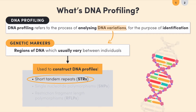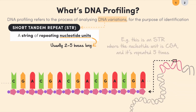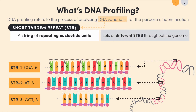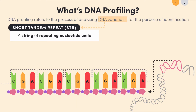STRs consist of a string of repeating nucleotide units that are usually two to five bases long. For example, CGA-CGA-CGA-CGA-CGA is an STR where the repeating unit is CGA and it's repeated five times. There are actually lots of different STRs consisting of different repeating units, repeated different numbers of times, in different places in the genome. But if we focus on just a single STR — the one with the CGA repeat — everyone has the same repeating unit in the same place in the genome.